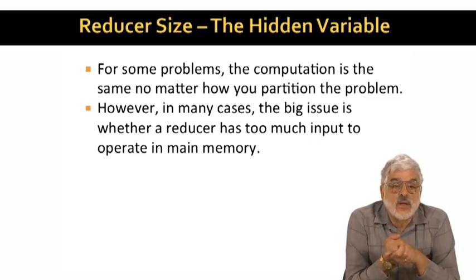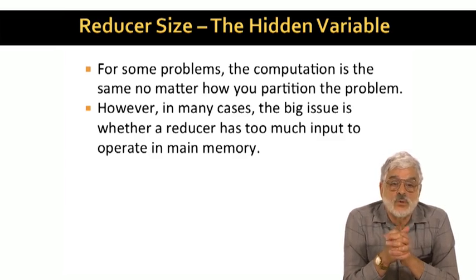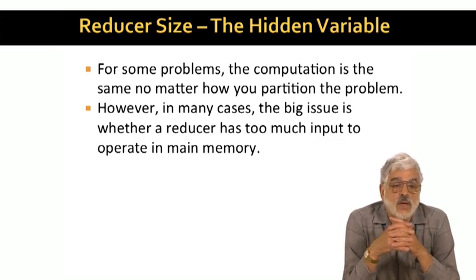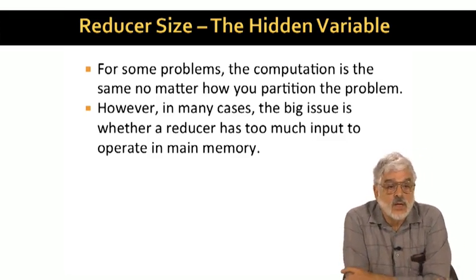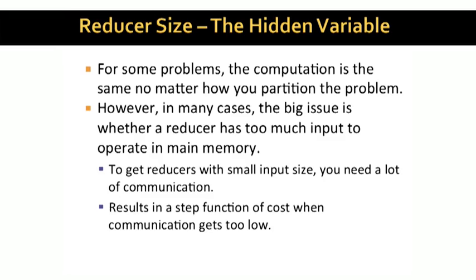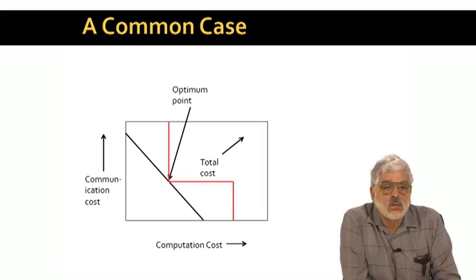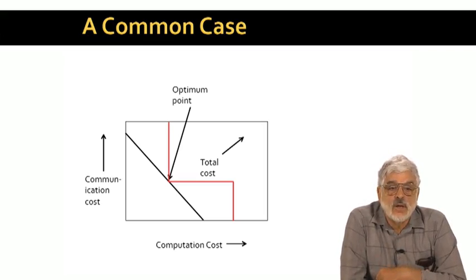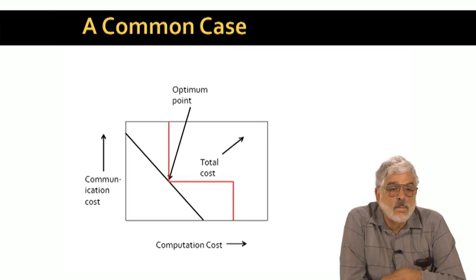There's a little more to the story of the communication and computation trade-off. It may be that abstractly, you do the same computation at the reducers no matter how you partition the work. But if you give one reducer so much input that it has to swap data between main memory and secondary memory, then the time to do the same computation can go up radically. It's also common that if you want a small amount of input per reducer, you need to use a lot of communication — we'll see an example like this shortly. The consequence is that the communication-computation trade-off is really a step function: there is one computation cost if the communication is sufficiently high, and another larger cost if the communication is too low. The optimum point is the one representing the computation cost assuming everything can be done in main memory, and the minimum communication necessary to allow reducers to take that small amount of data.